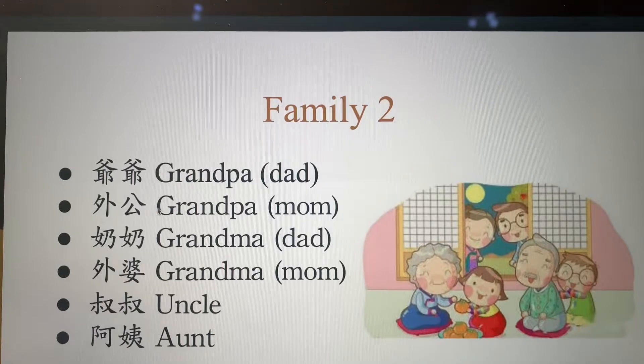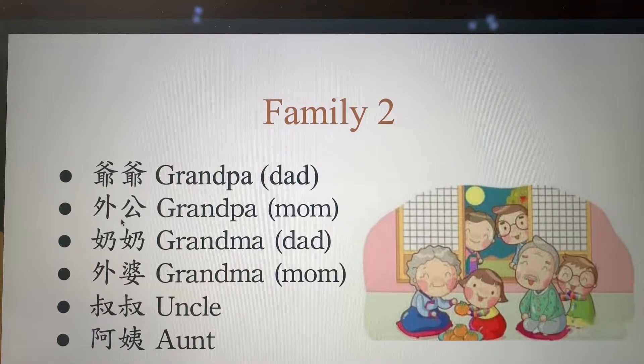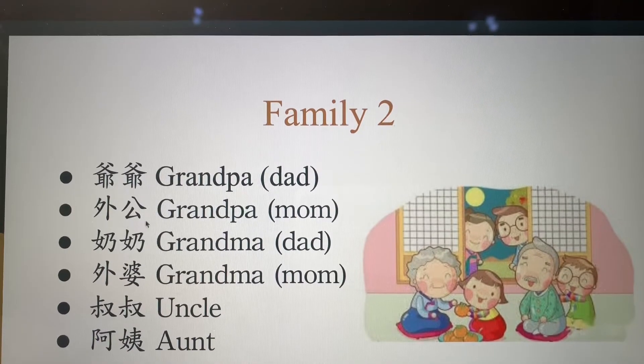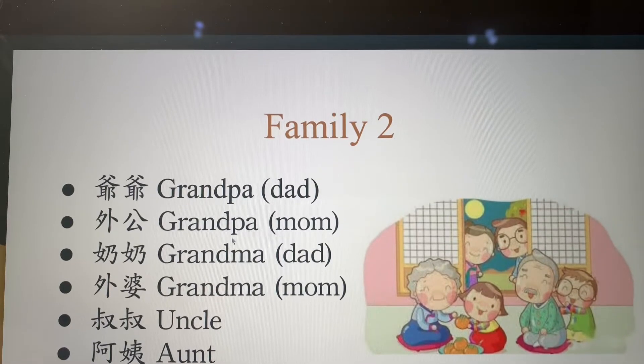The second one is 外公. 外公 is on the mom's side — mother's dad.